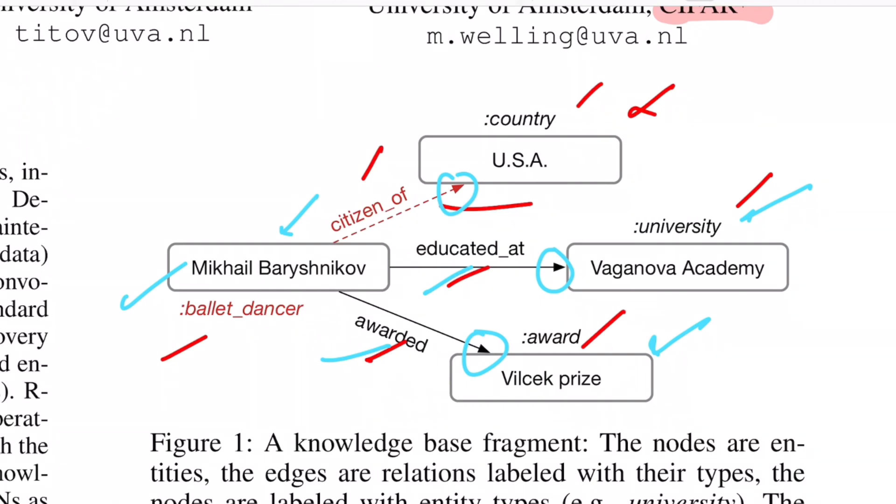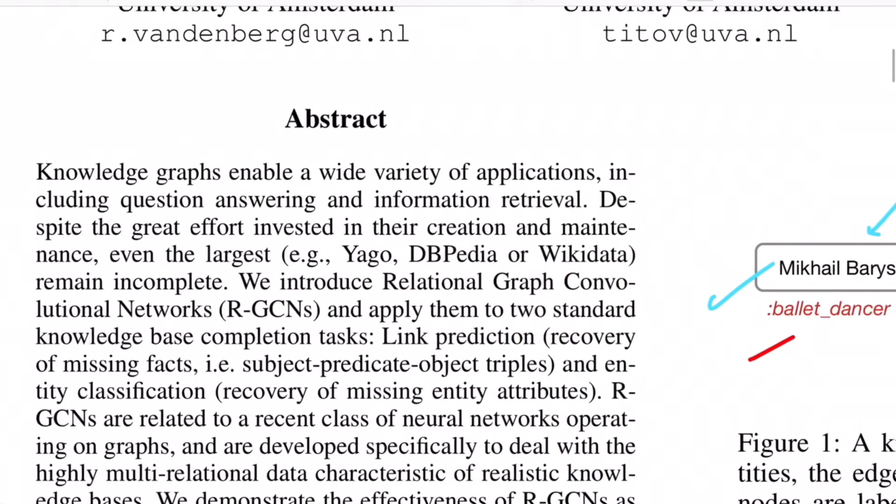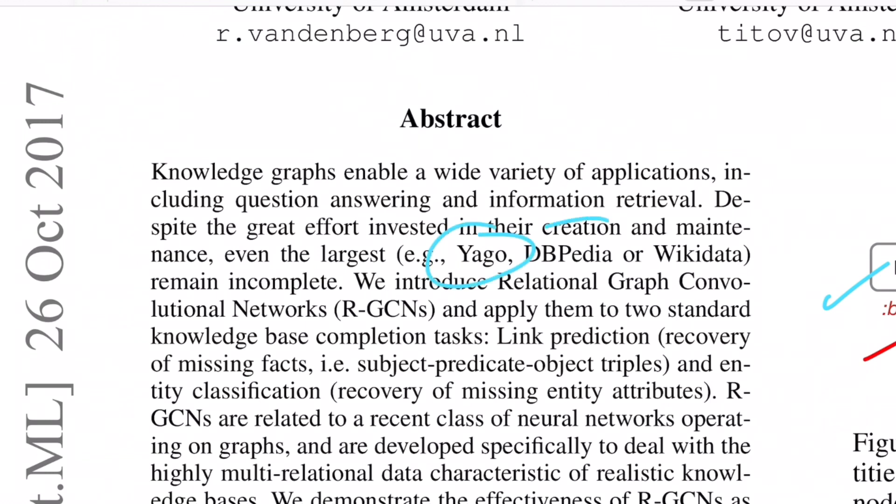So there are many such freely available knowledge graphs that are available to the public such as YAGO, DBpedia, Wikidata, and Freebase and so on. So as the author says, despite the great effort invested in the creation and maintenance of such large graphs, these still remain incomplete in some sense.